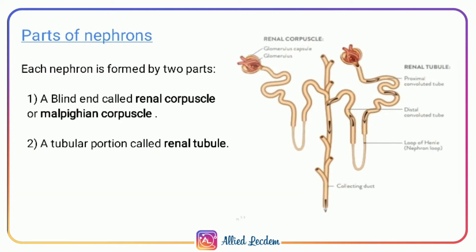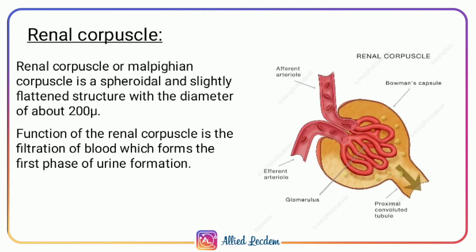Parts of the nephron: each nephron is composed of a renal corpuscle and a renal tubule. Under the renal corpuscle we have the glomerular capsule and glomerulus. The glomerular capsule is also known as Bowman's capsule. Under the renal tubule we have the proximal convoluted tubule, distal convoluted tubule, loop of Henle, and collecting duct.